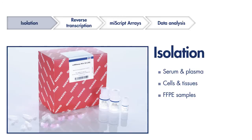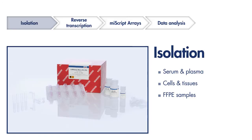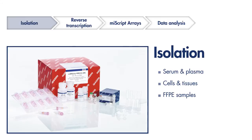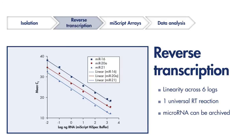Step 1 is isolation of microRNA from your starting materials. miRNeasy isolation kits have been tailored to isolate high-quality microRNA from virtually any sample source, including blood, tissues, and FFPE samples. Once microRNA has been isolated, it is ready to be profiled.